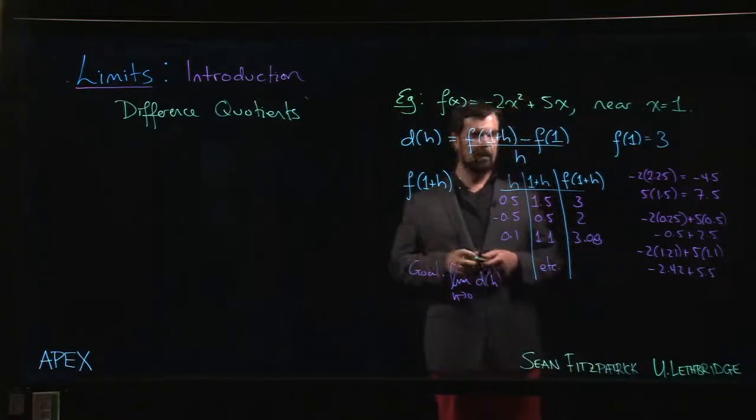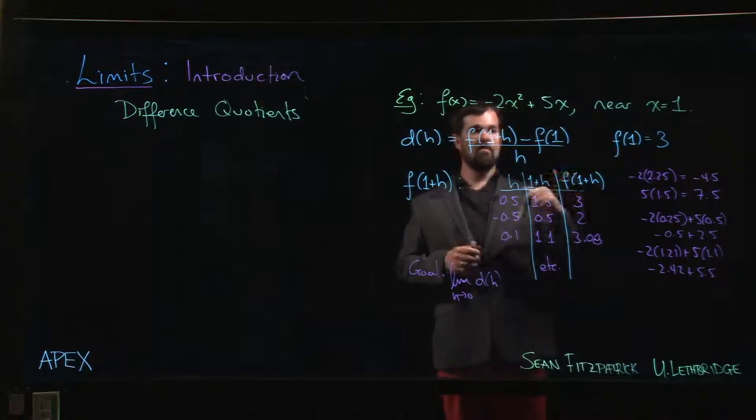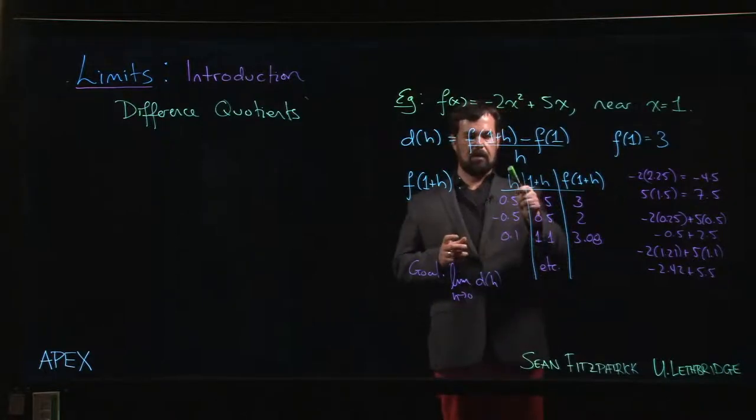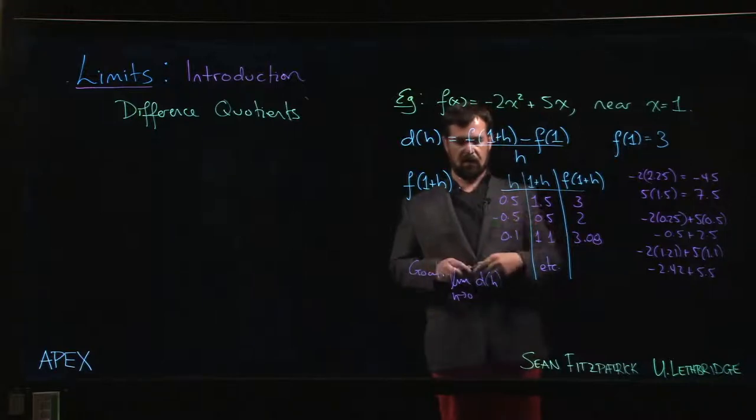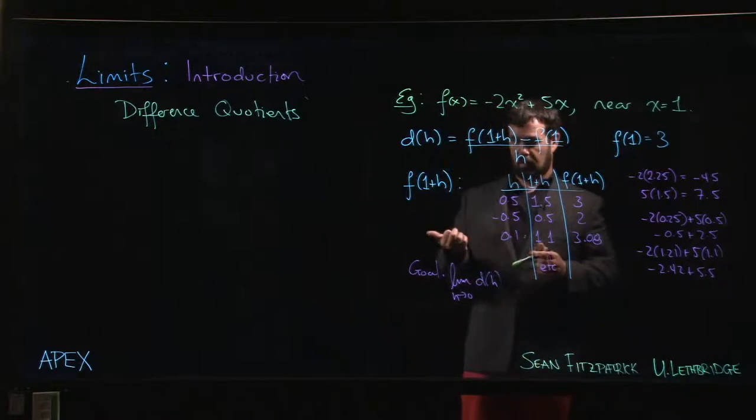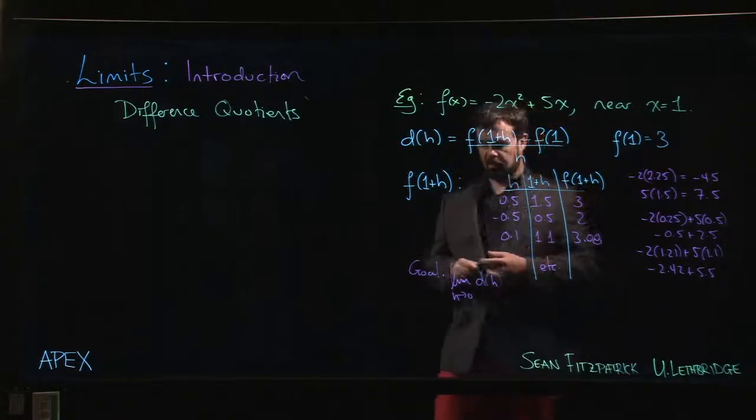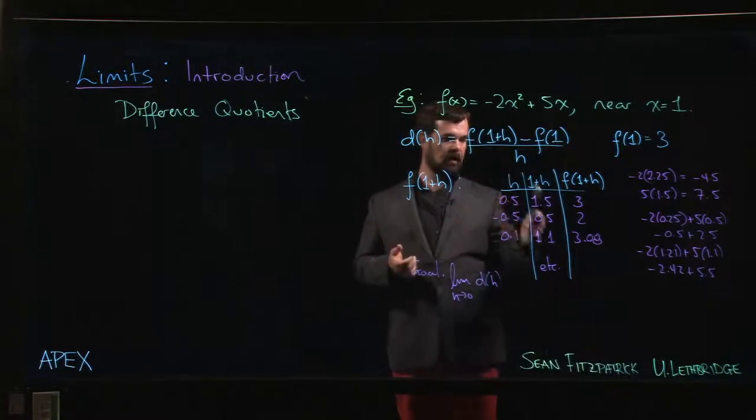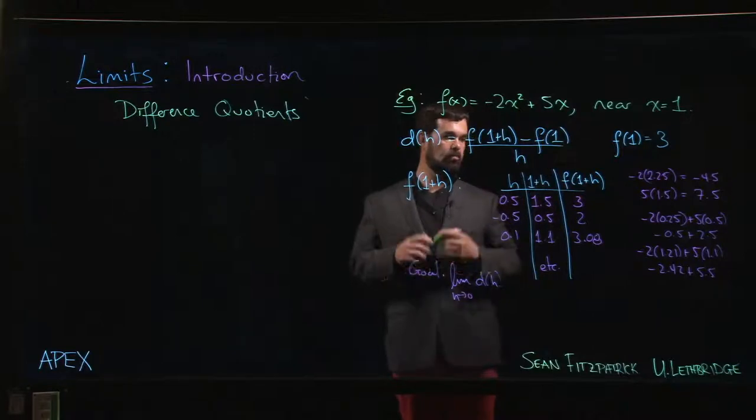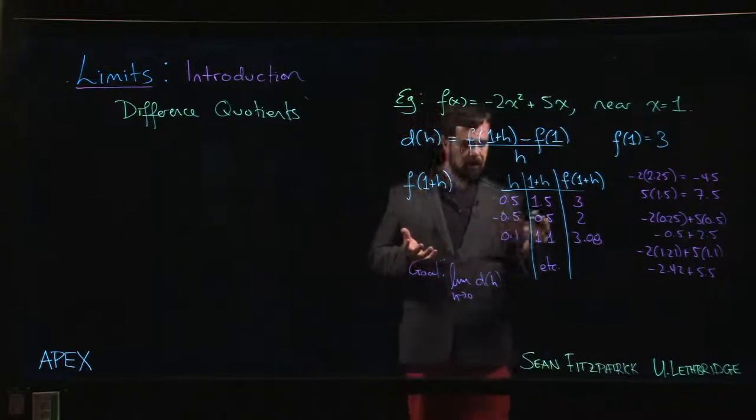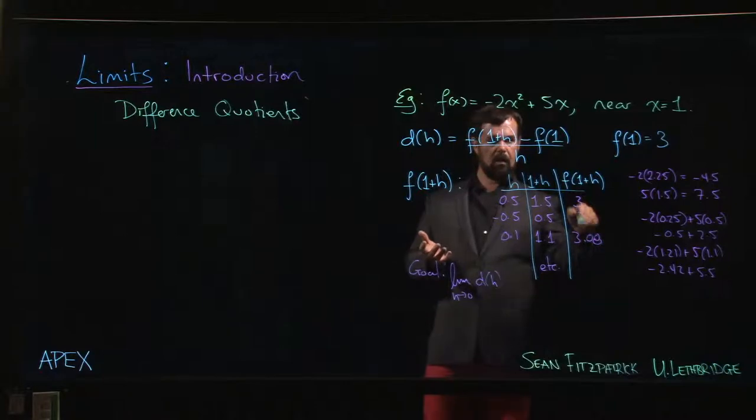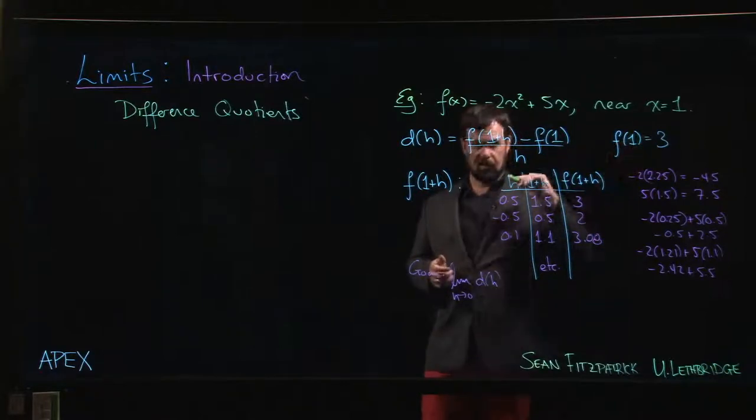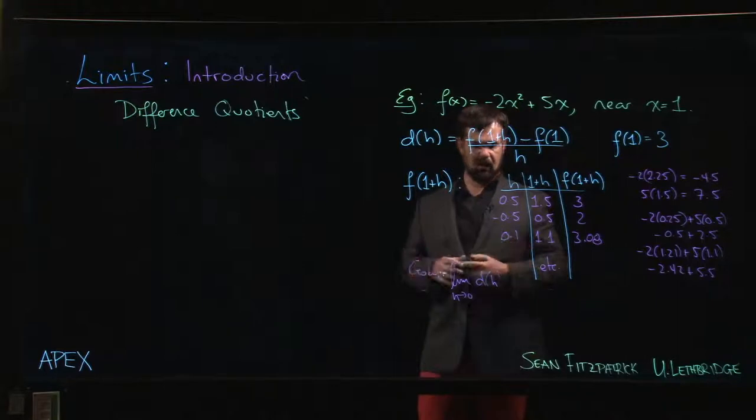f of 1 is simple enough to compute, but then you've got to take your different values of H. You want to look at values close to 0, so probably plus or minus 0.1, plus or minus 0.01, and so on. Once you've chosen your H, add 1 to it to get 1 plus H, take that 1 plus H, plug it into your function, see what you get. And then once you've worked that out, subtract f of 1, subtract that 3, divide by the original H - you've got your difference quotient.